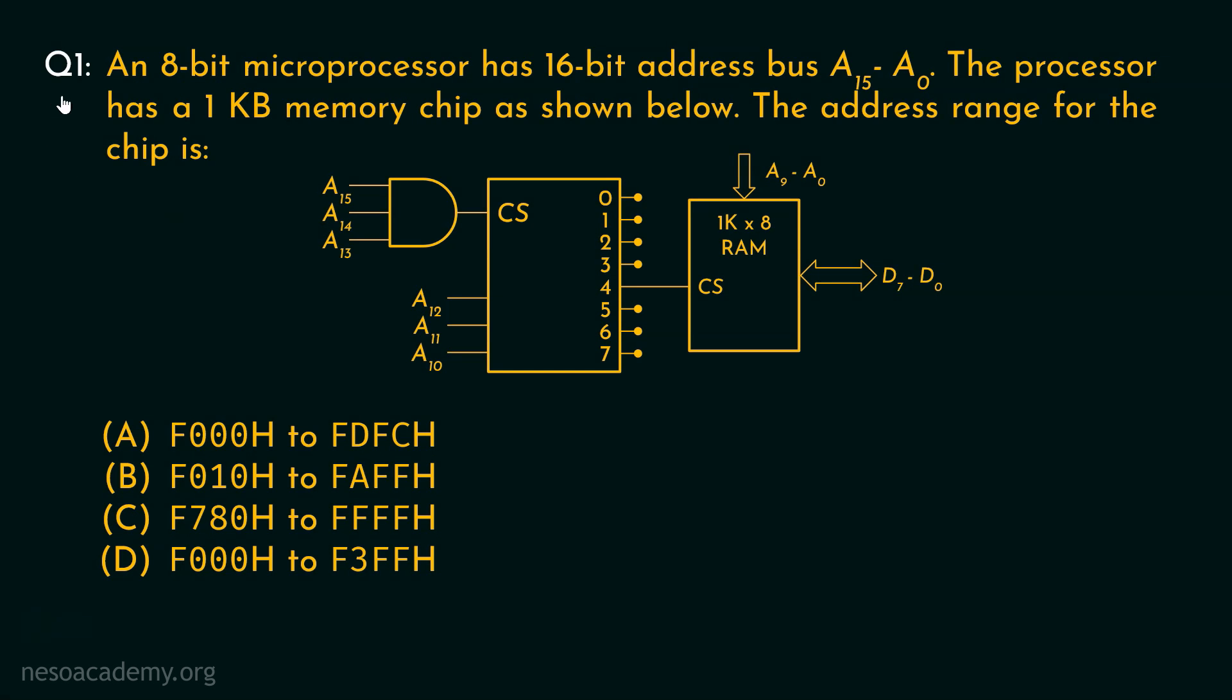Let's focus on the first question. An 8-bit microprocessor has a 16-bit address bus, and the pins in the bus are named as A15 to A0. The processor has a 1KB memory chip as shown below. So this is the memory chip we are talking about. And the address range of the chip is, so we are supposed to find that out. Now we have been given 4 different options. And as you can notice, in all these 4 options, we have been given 2 different addresses. Now what does that mean? Well, these are the starting addresses and these are the final addresses. And that's what is meant by the address range in the question.